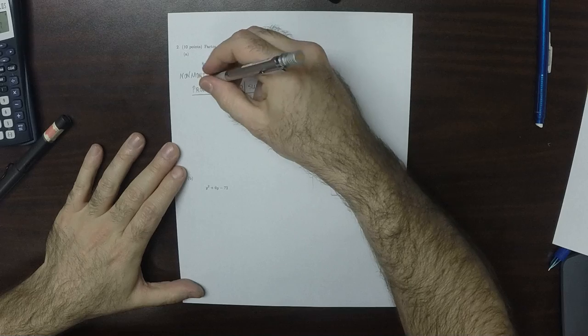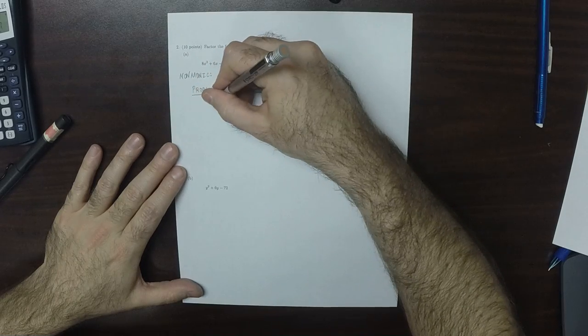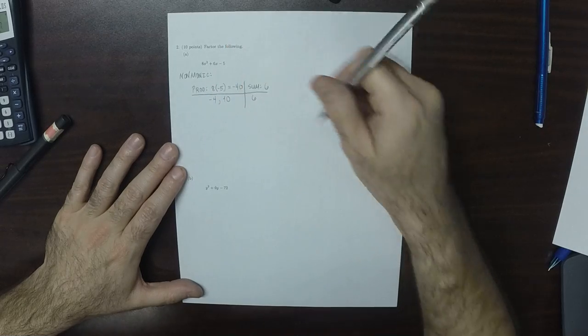So that means we're going to take negative 4 and positive 10. The sum of those two is 6.